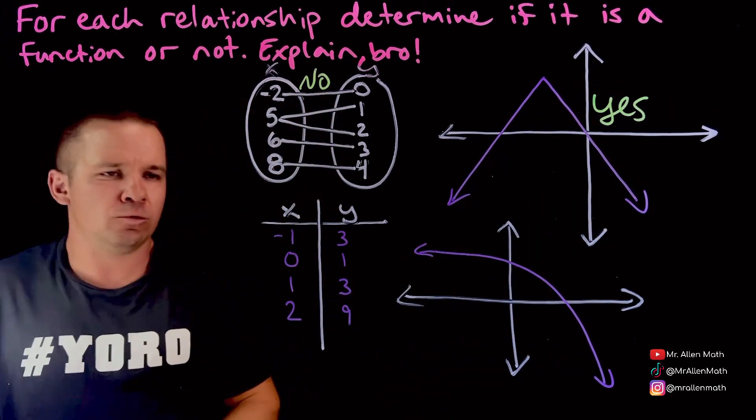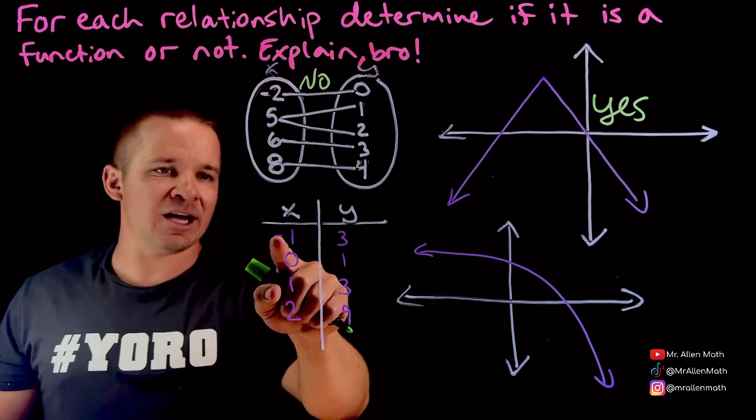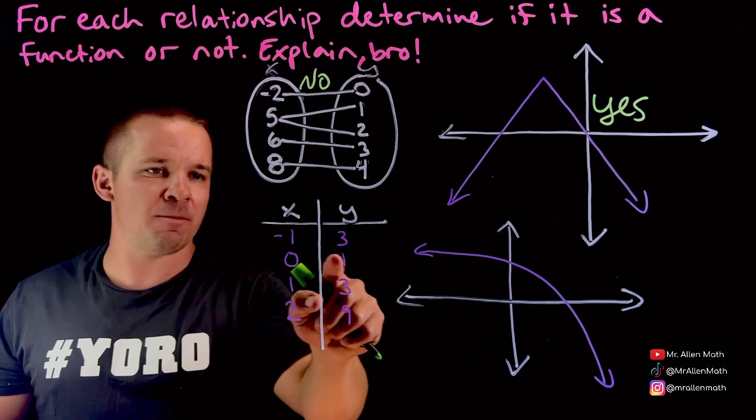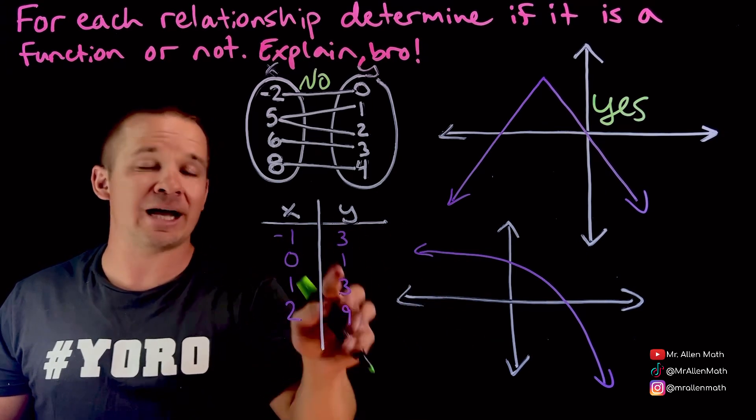Next one here. T chart. Love T charts. So I've got negative one maps onto three, zero maps to one, one to three, two to nine.